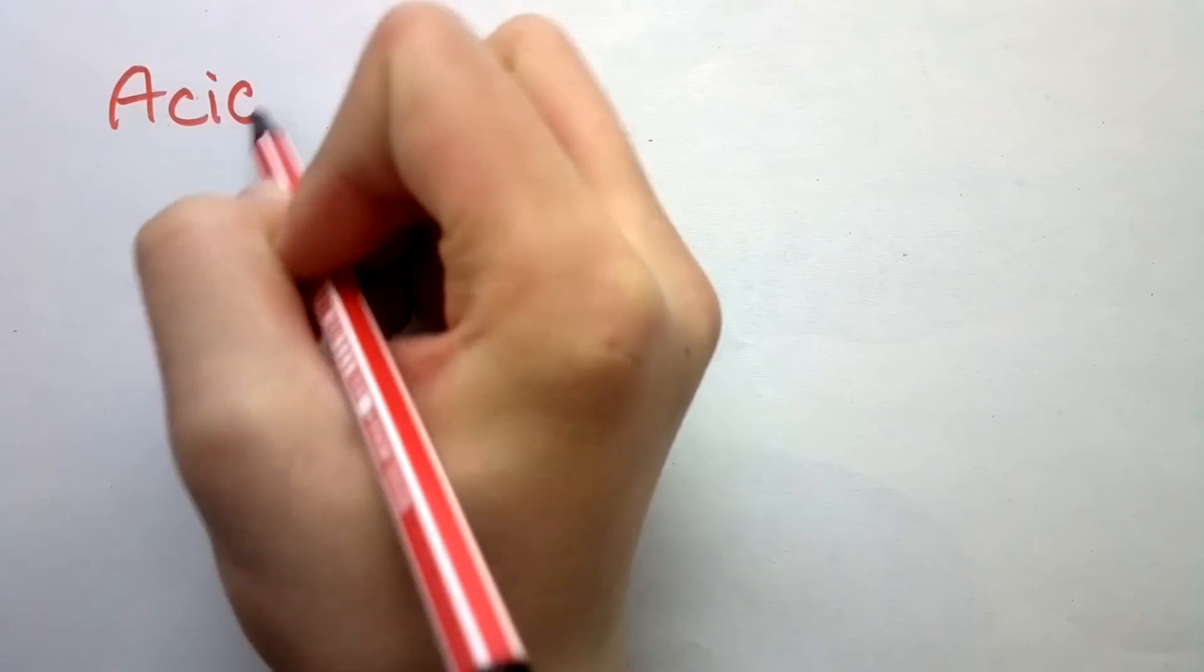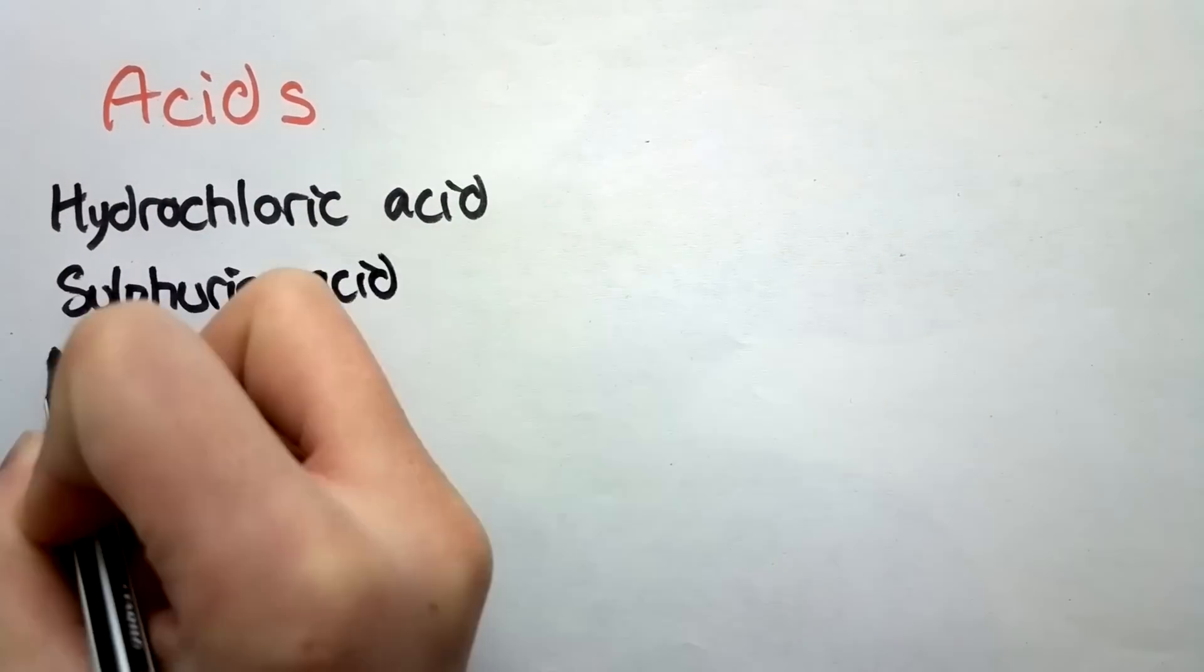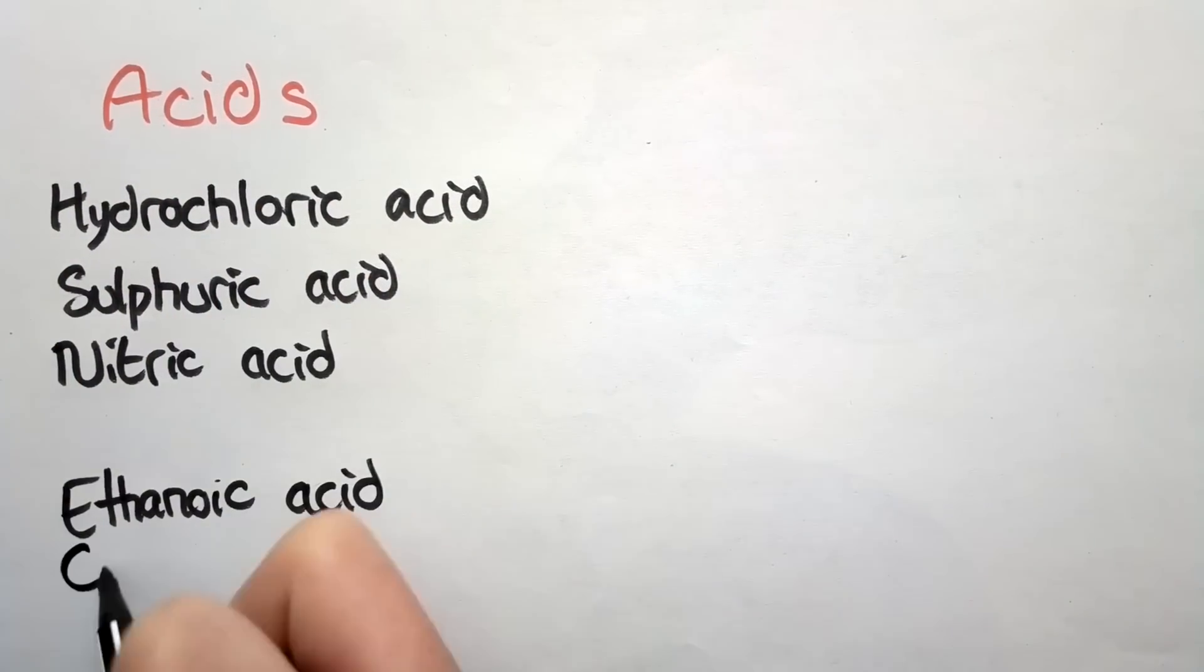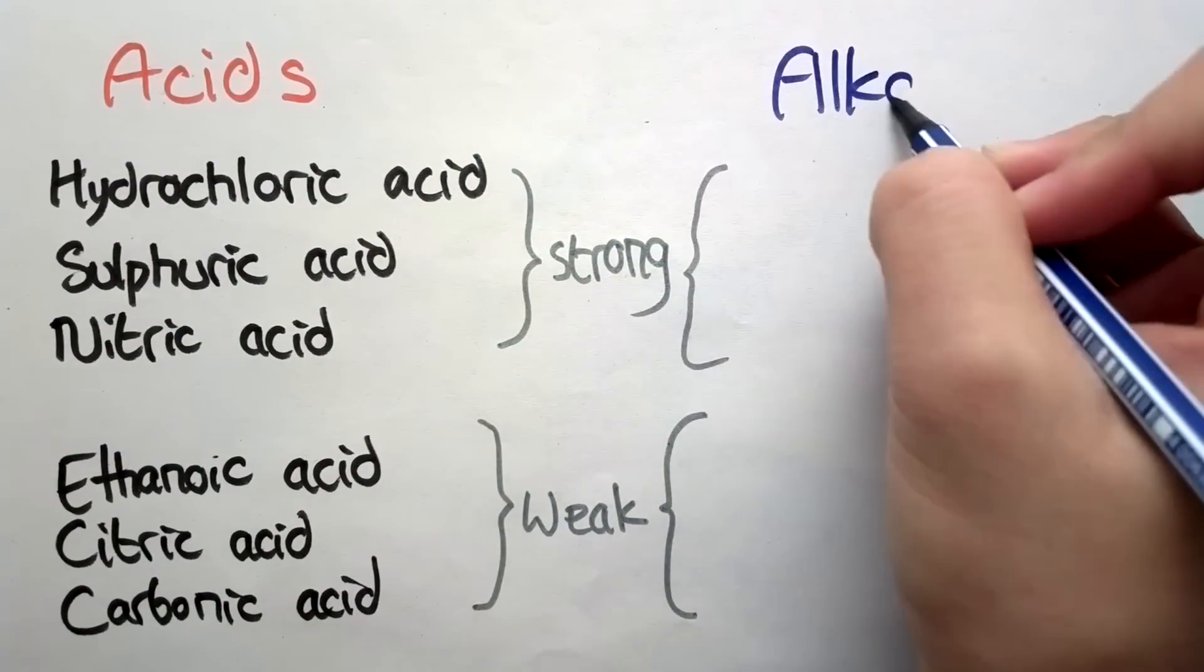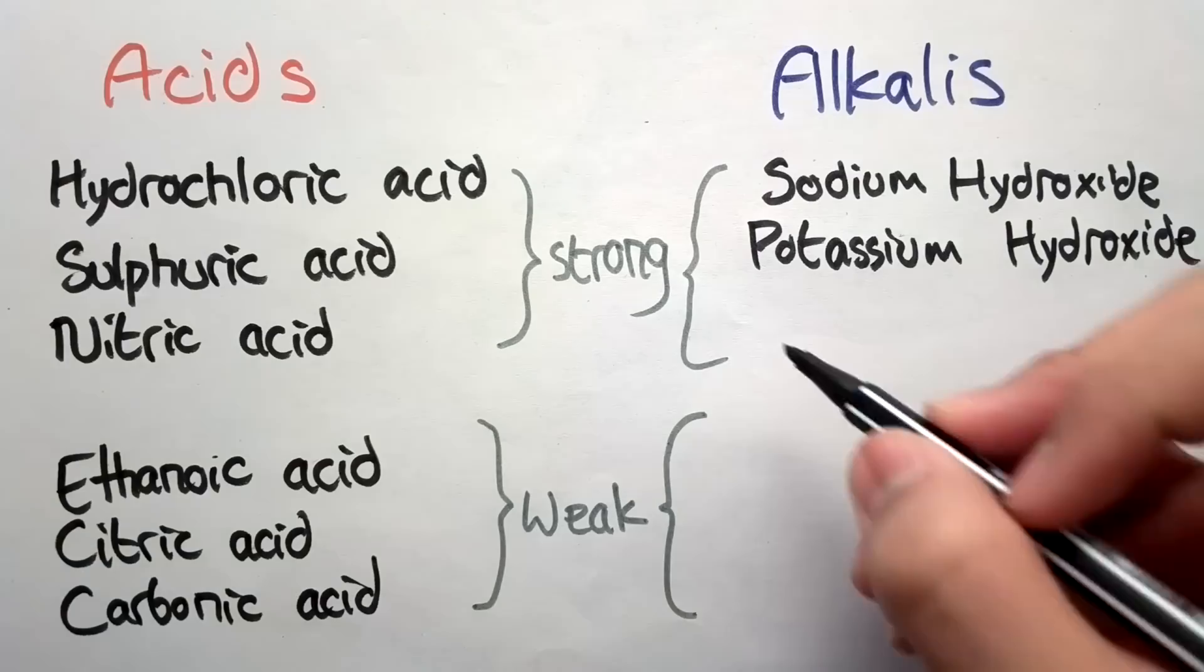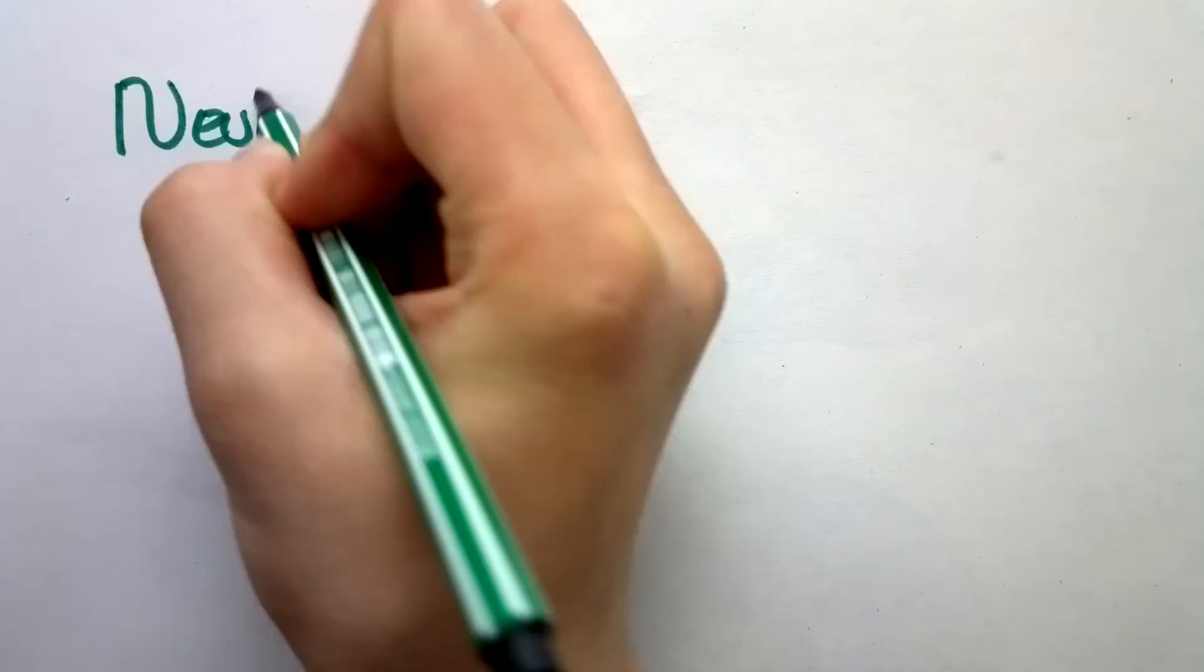Some acids include hydrochloric acid, sulfuric acid, nitric acid, ethanoic acid, citric acid, and carbonic acid. And some alkalis include sodium hydroxide, potassium hydroxide, calcium hydroxide, and ammonia.